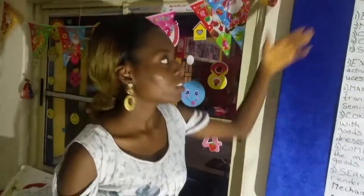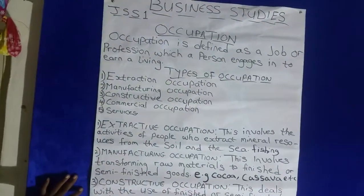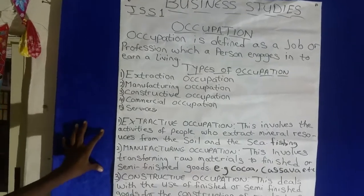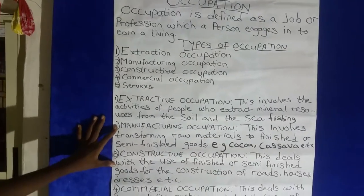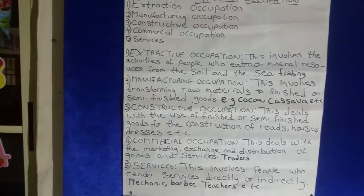You have five types: extraction, manufacturing, constructing, commercial, and services. If you are involved in any of these, they are called your occupation, and they will earn you money. Please ensure you go through your notes, understand the meaning of occupation, know the types and how to explain them, and also know their advantages. It will help you understand and give you an idea of what you want to do in the future to earn money. Thank you very much for today's class — join us next time, same class, same teacher, same subject.